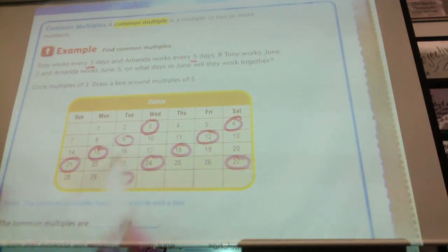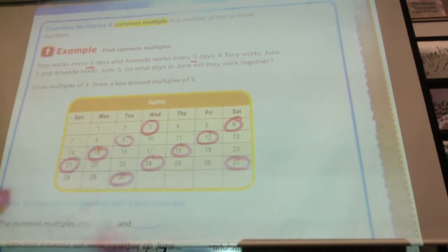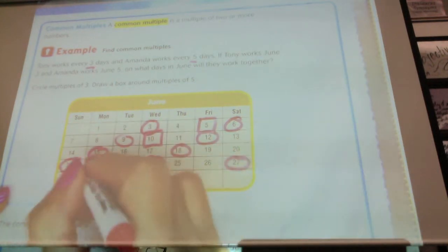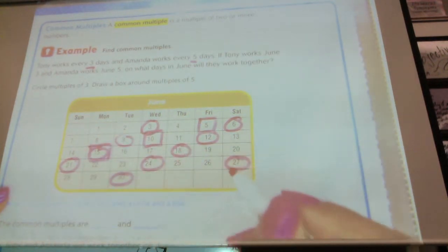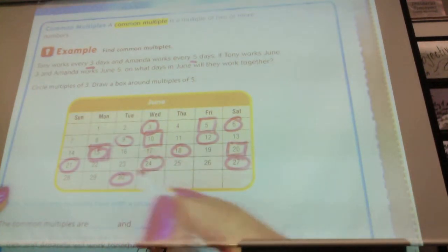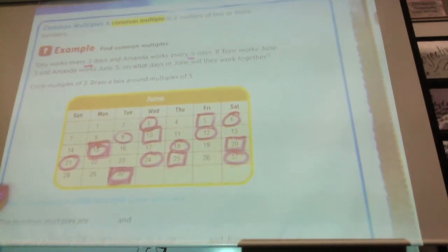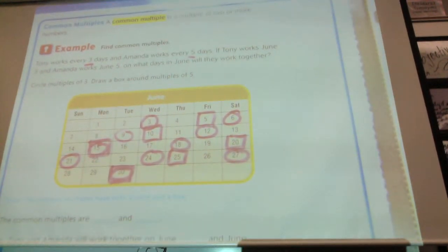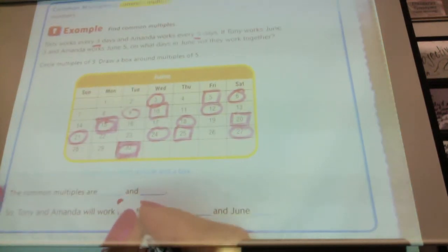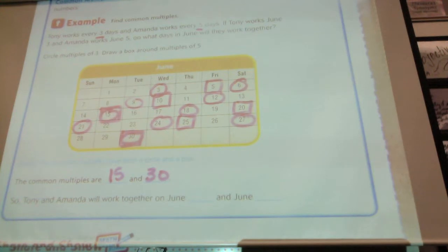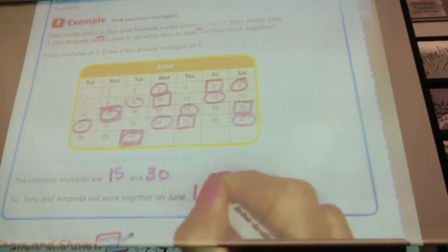Then, we need to do what for Amanda's days? Draw a box. So, we're going to start with five. What's the next multiple? Ten. Fifteen. Twenty. Twenty-five. How many days are they going to be working together? Two days. Which two days? Fifteen and thirty. So, Tony and Amanda will work together on June 15th and 30th.